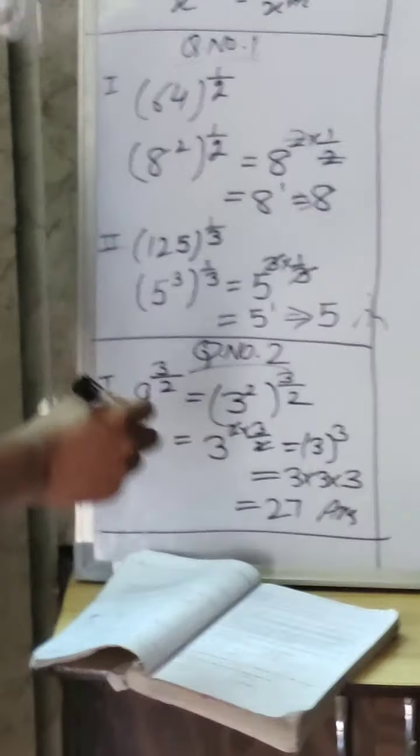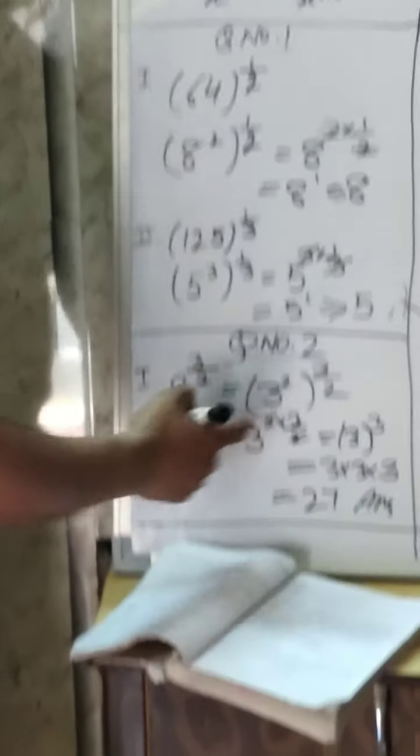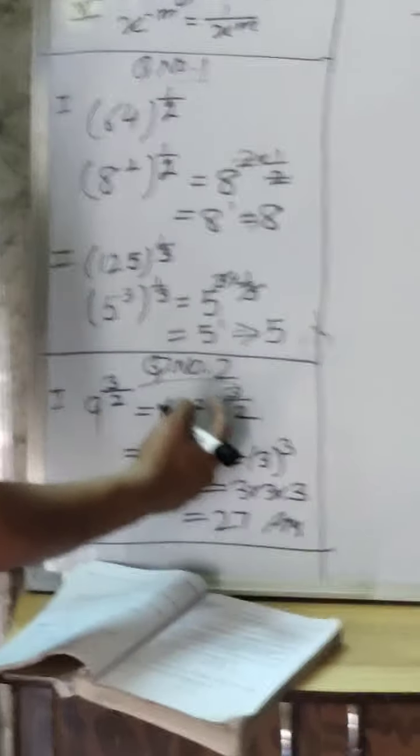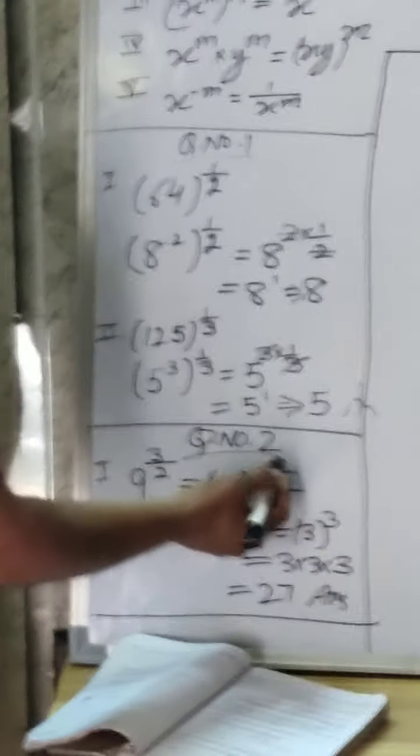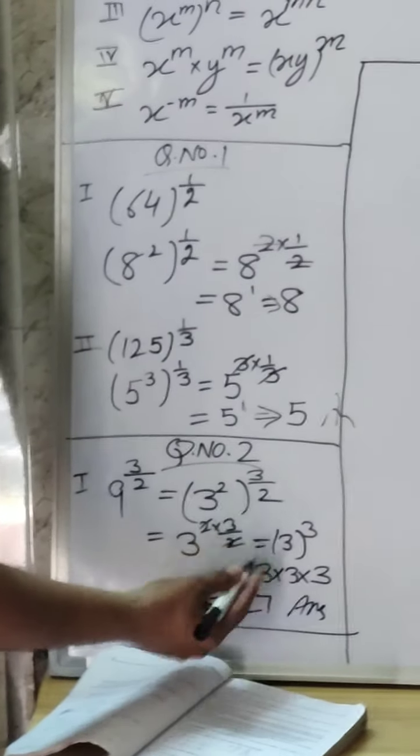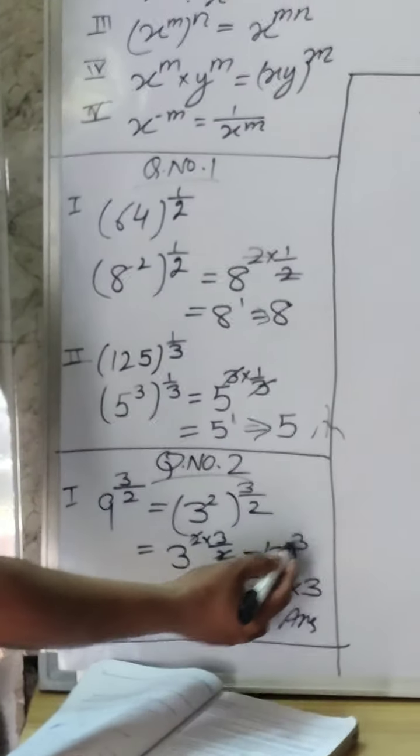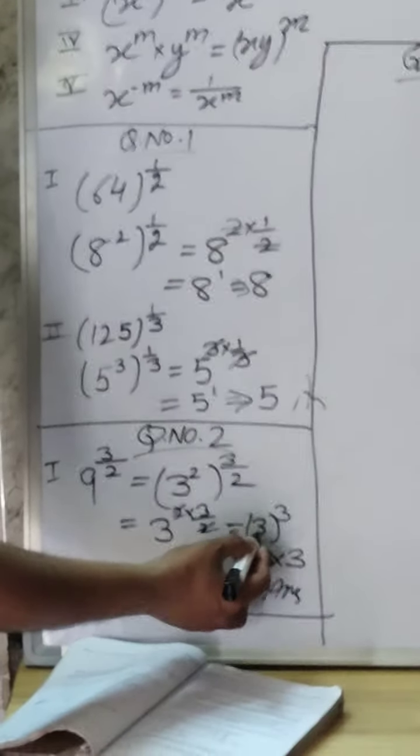So 9 power 3 by 2. 9 you can write as 3 square, whole power 3 by 2. Power raised to power multiply, 2 cancel, 3 power 3, means write 3 three times, it is 27.